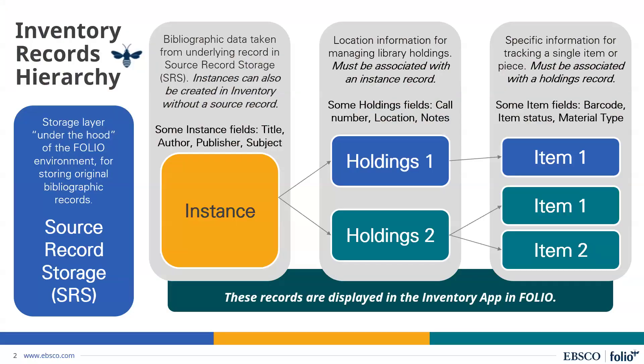To start with, I wanted to share this slide with you. It covers the record hierarchy of the inventory app in FOLIO, which is the place for your catalog records. There are three different record types I may refer to throughout today's session: your instance records, your holdings records, and your item records.